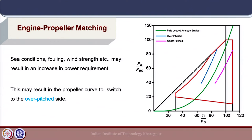Sea conditions — fouling, wind strength, etc. — play a very strong role in the power demand for a ship. These conditions increase the power demand, and because of this increase, the propeller power curve is shifted: the optimal curve without rough sea or fouling will be lower compared to when these conditions are considered. These will result in the propeller curve shifting slightly to the over-pitched side, meaning the power demand will be slightly higher. This needs to be accounted for in engine propeller matching, which is why service conditions are very important for a specific ship type.